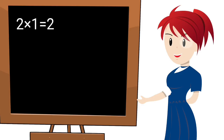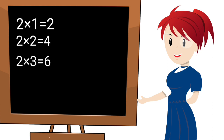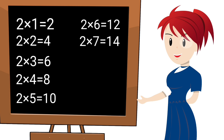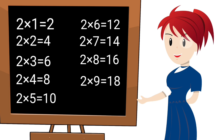2 ones are 2. 2 twos are 4. 2 threes are 6. 2 fours are 8. 2 fives are 10. 2 sixes are 12. 2 sevens are 14. 2 eights are 16. 2 nines are 18. 2 tens are 20.